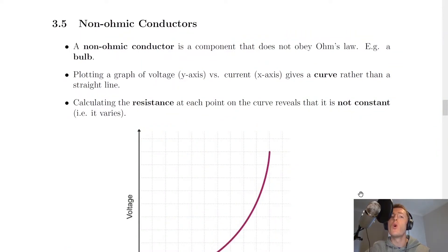Now we've already seen in the theory video for ohmic conductors that ohmic conductors obey Ohm's law. But a non-ohmic conductor, on the other hand, is a component that does not obey Ohm's law. For example, a bulb or a lamp.